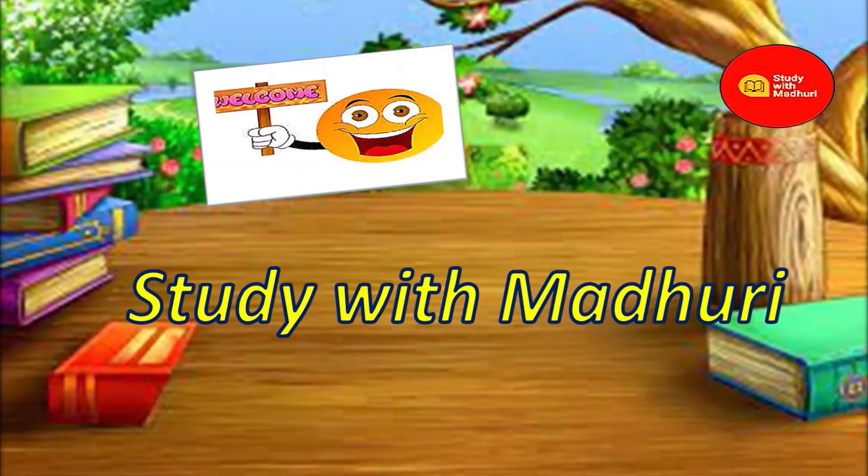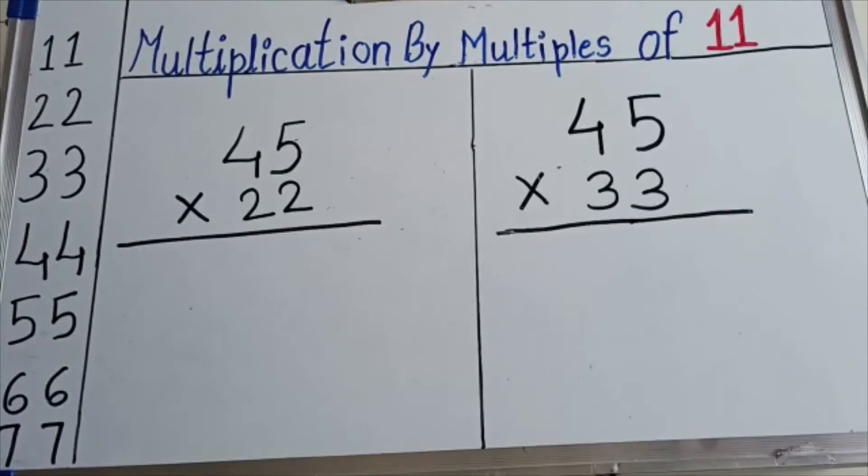Hello everyone, welcome to Study with Madhuri. Today we will learn multiplication by multiples of 11. What do you mean by multiples? Multiples means numbers appearing in table of 11. I have written table of 11: 11, 22, 33, 44, 55 and so on are the multiples of 11.